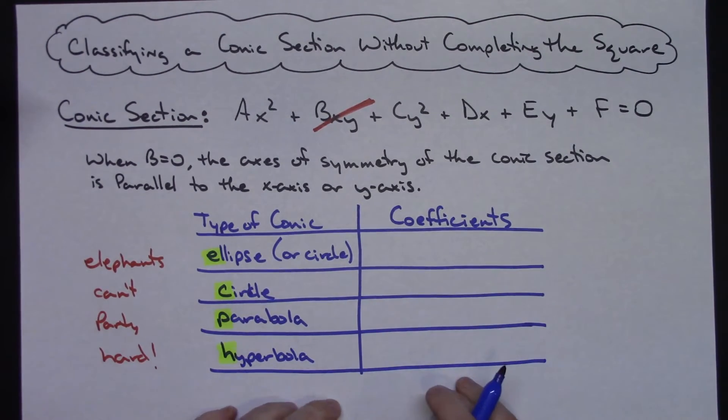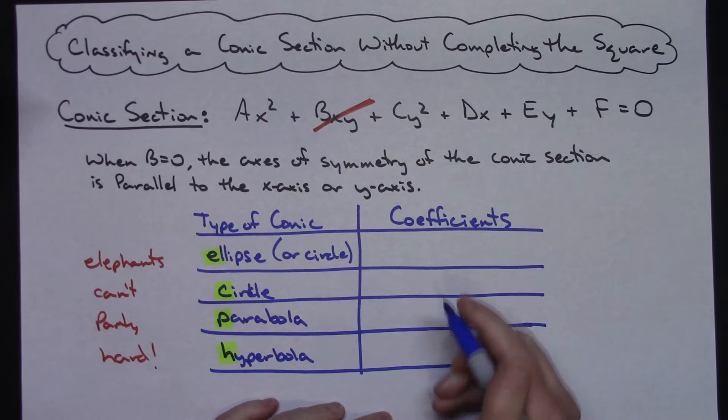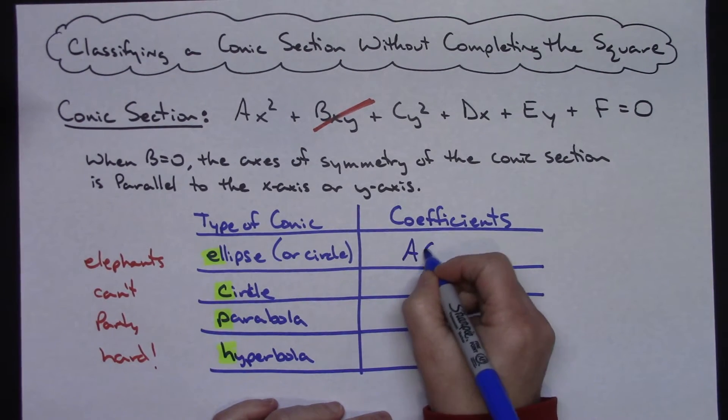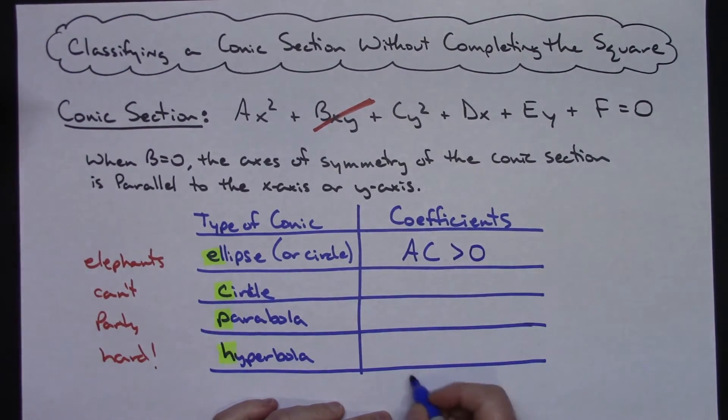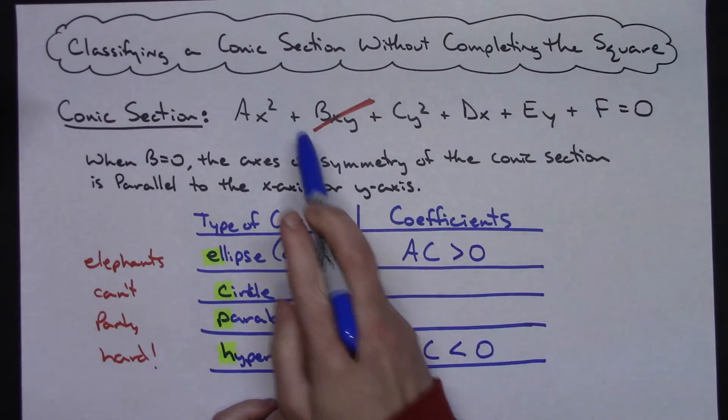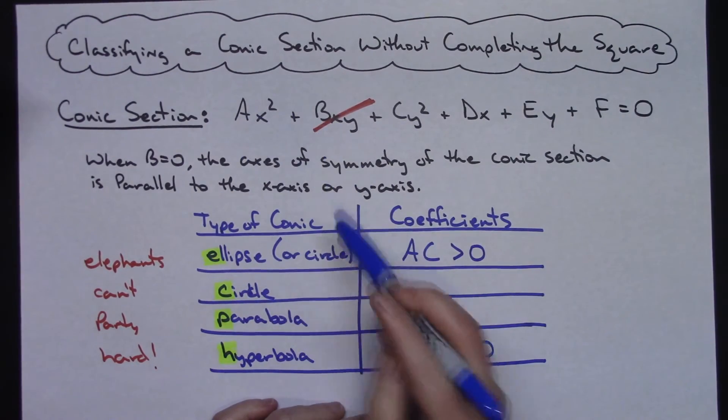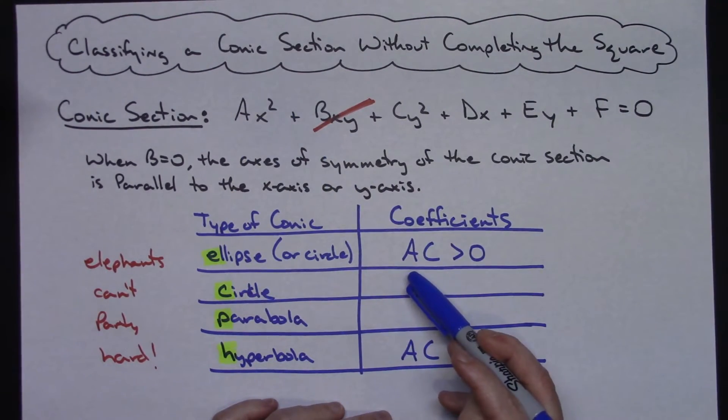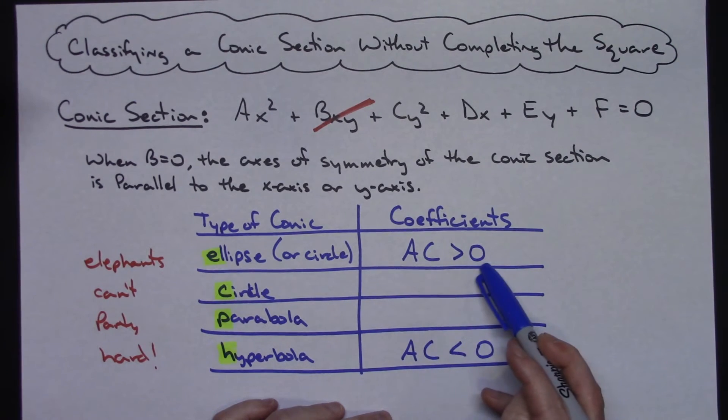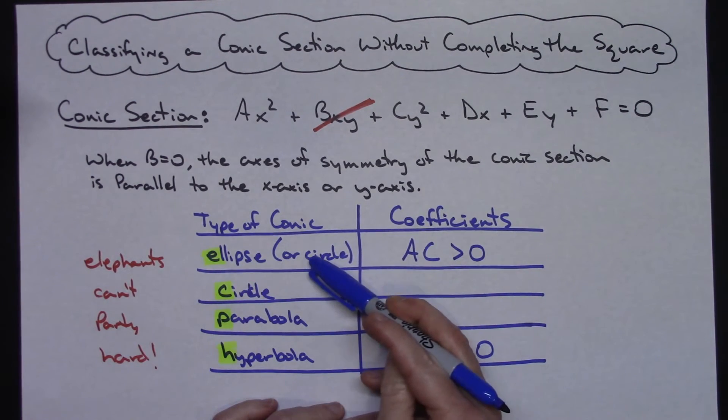Now filling in this chart, I usually fill in the top and the bottom first. So A times C is greater than zero, A times C is less than zero. So looking at this equation, when my B is zero, if I take my coefficients A times C, and they're greater than zero, then I've got an ellipse, or possibly a circle.